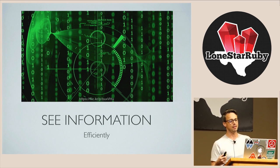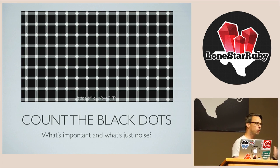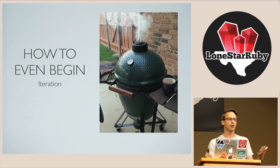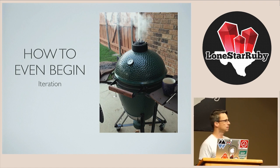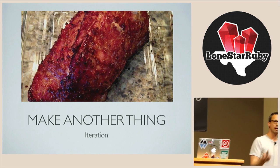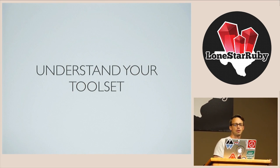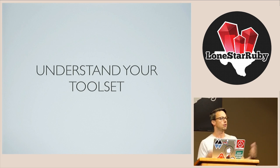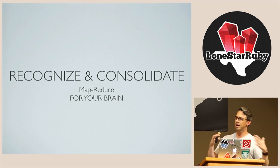I'm talking about building the ability to find and discern useful information efficiently. What's important and what's just noise? When you're starting something out, you have to figure out all the fundamentals. How do you set out? What are the tools that I need to operate in this thing? How do I even begin? So you make a thing, and you learn something, and you make another thing, and you learn some more. You learn how to move around in that environment. You learn the idioms of the language. You learn what to do when something goes wrong. You understand that tool set. You begin to recognize and consolidate information. You're able to discern these things. It's kind of like a MapReduce for your brain.